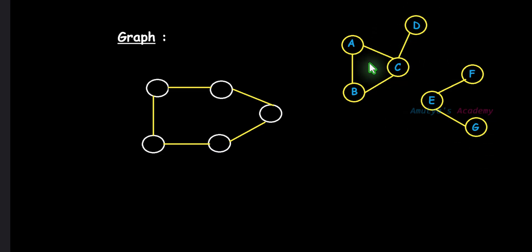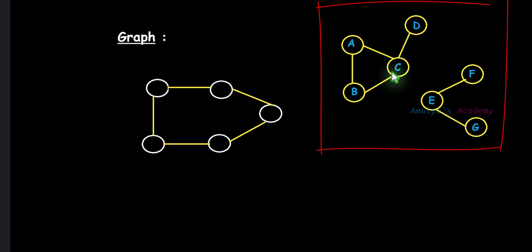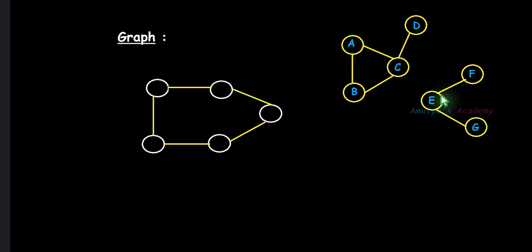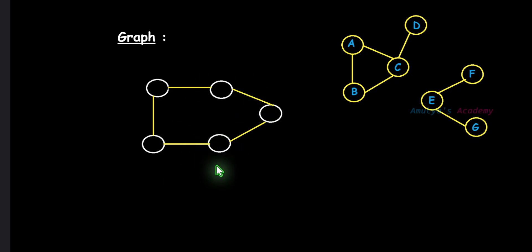Here is a disconnected graph. This disconnected graph contains two connected components. But this is a connected graph, as you can see here. Today we will write a Python program to check whether a given graph is a connected graph or a disconnected graph using the BFS algorithm. It's very simple.